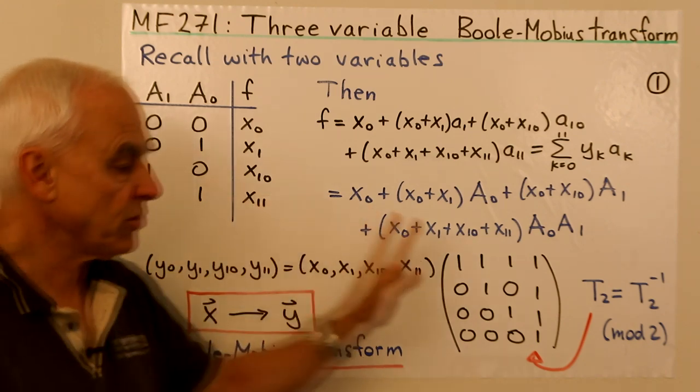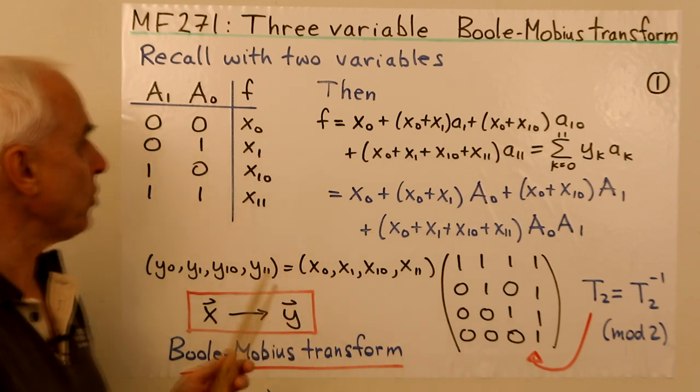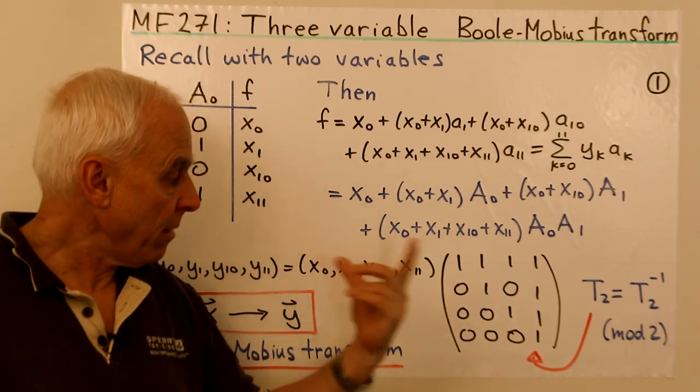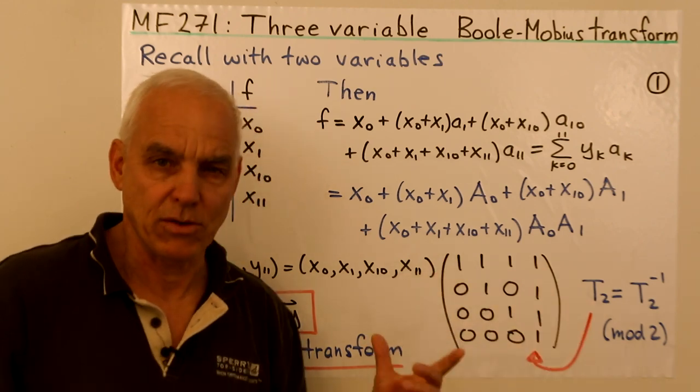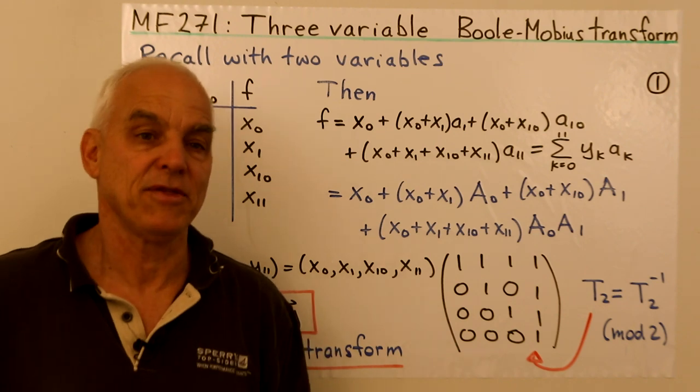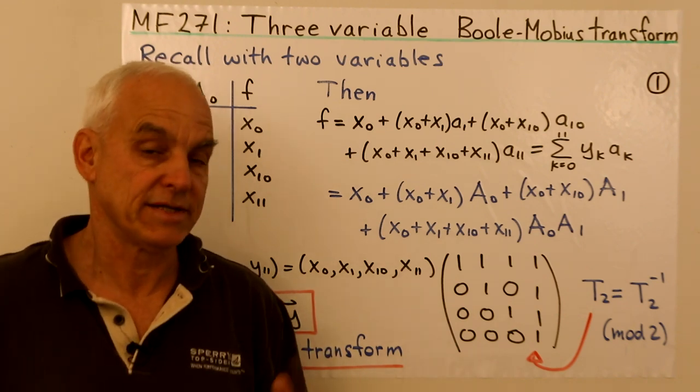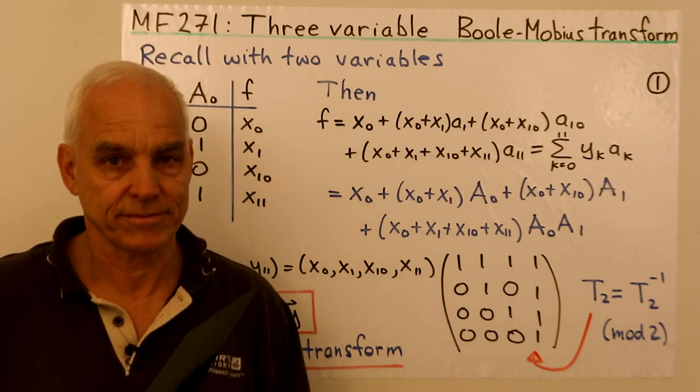What we want to do now is look at this in the more general situation when we have three variables. It'll be a bit more complicated, but it will bring into clear focus what this matrix is and where it's really coming from. We'll be able to see that there's actually a very beautiful and simple connection with some combinatorics.